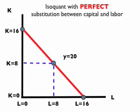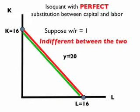In this circumstance, firms will be very sensitive to slight changes in the cost of labor or capital in choosing whether or not to use one or the other. Suppose the wage was exactly equal to the cost of capital, so that the wage-rental ratio was 1, which happens to be exactly the slope of this isoquant. In that event, the firm would be indifferent between any combination of capital and labor on the red line — 16 units of capital with no units of labor, 16 units of labor with no units of capital, or any combination in between.